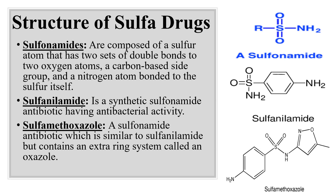Here we have the structure of sulfonamides. The sulfonamide structure has a sulfur atom bound to two oxygen atoms by double bonds, and this sulfur is also bound to a carbon-based side group and to a nitrogen atom. Sulfanilamide is a synthetic sulfonamide with antibacterial activity. Sulfamethoxazole is similar to sulfanilamide but contains an extra ring called an oxazole ring.